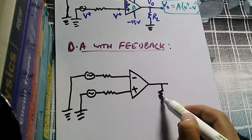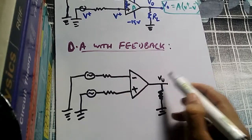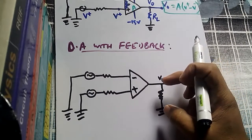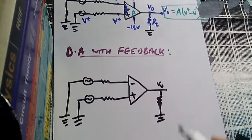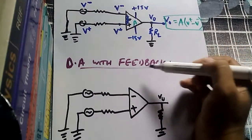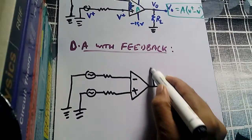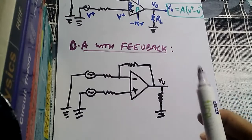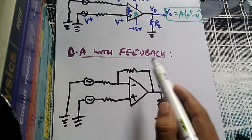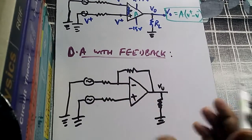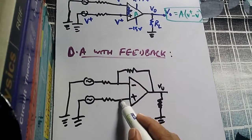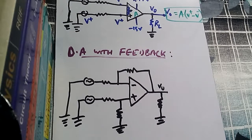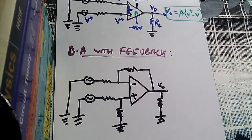All the voltages are with respect to ground; the output voltage is also with respect to ground. I have used a load resistor across that output. Now I will give a feedback. Always remember that in a differential amplifier circuit with feedback, there is one more resistance added. In all practical differential amplifier circuits with feedback, there will be four resistors.